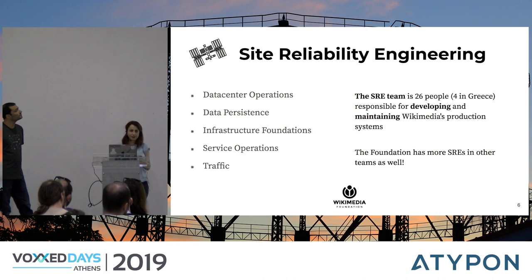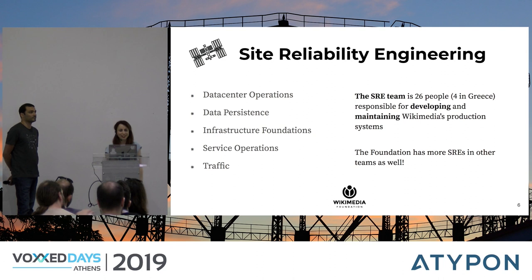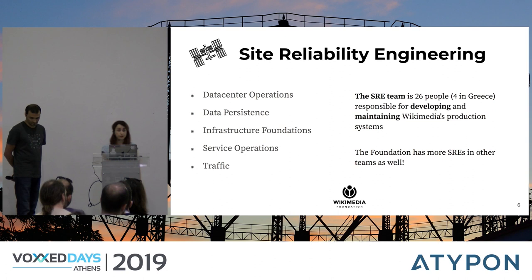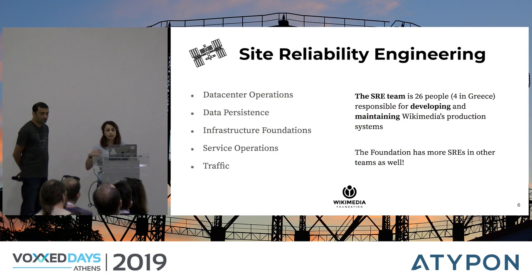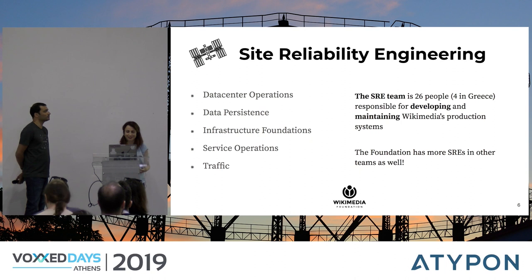The Site Reliability Engineering team is 26 people, responsible for development and maintaining of our production systems. We are divided into five sub-teams: the data center operations team who physically take care of our servers; the data persistence team, also known as database administrators, who are something like unicorns these days; the infrastructure foundations team maintaining all our tools like configuration management, logging, and monitoring; the service operations team, where me and Alex belong, doing services like MediaWiki and Kubernetes; and finally our traffic team, which deals with our networking edges and caches.